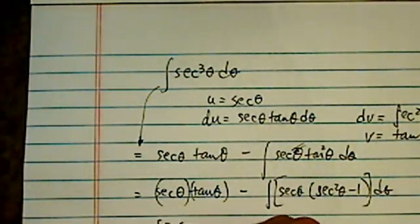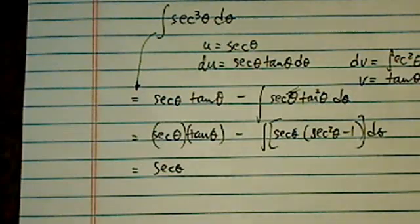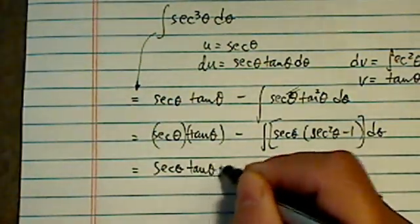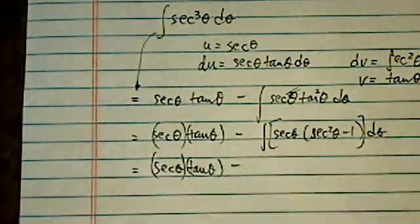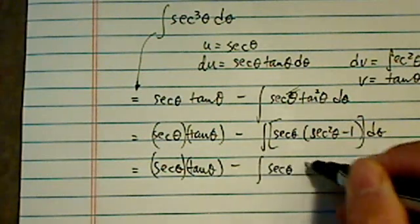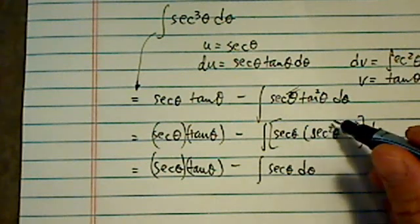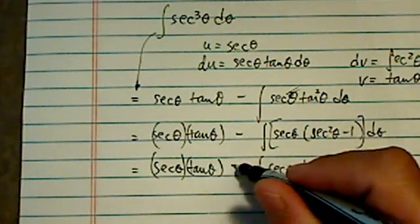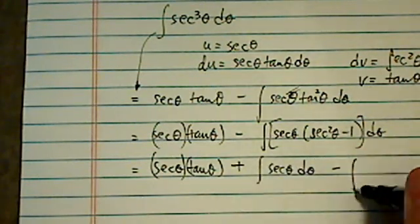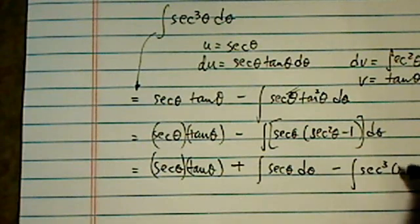So secant theta tangent theta minus secant theta d theta, that's one of them. And then I have, this is actually a plus sign, minus secant cubed again.